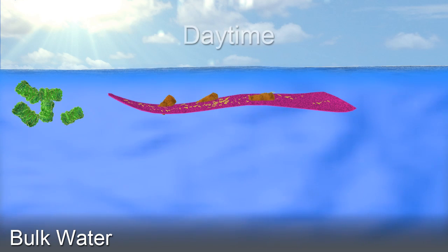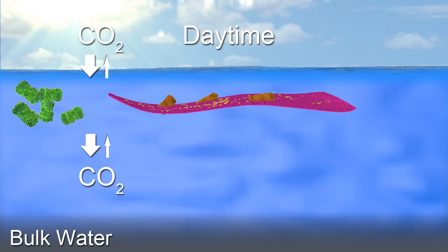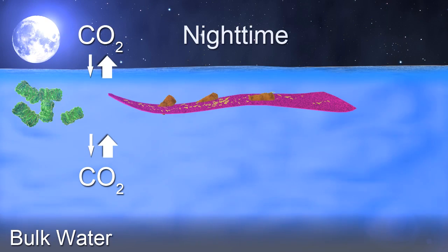This means that during the daytime, when there is a lot of sun, the consumption of CO2 dominates in the microlayer. But during the night time, this balance is shifted and due to the bacterial remineralization, more CO2 is released than taken up.